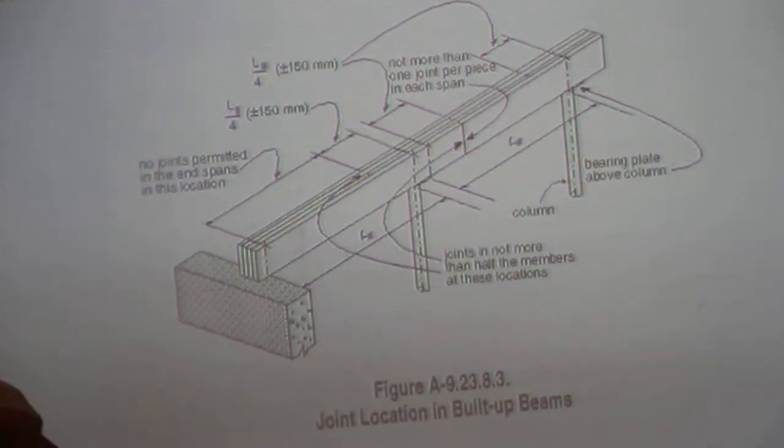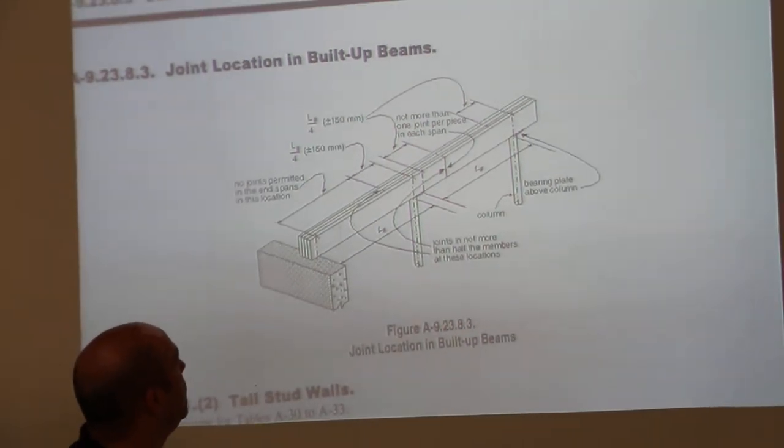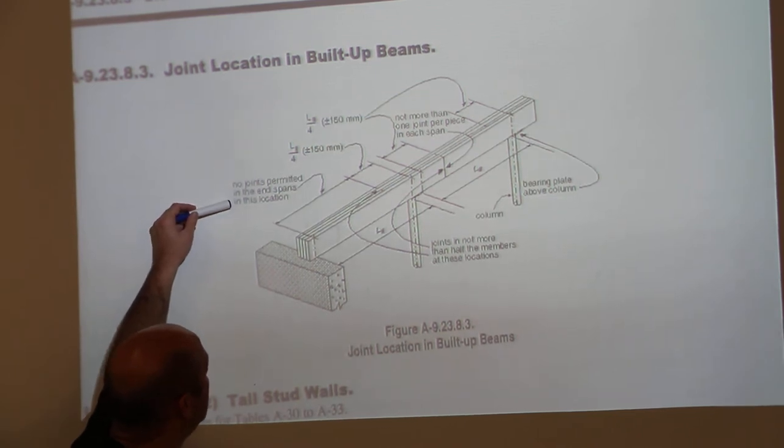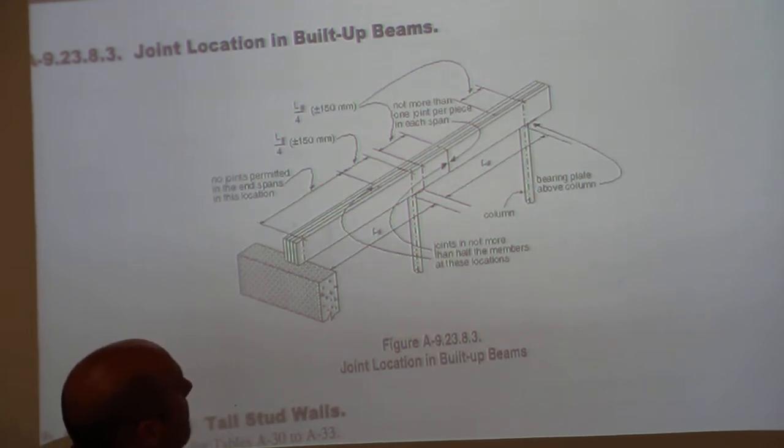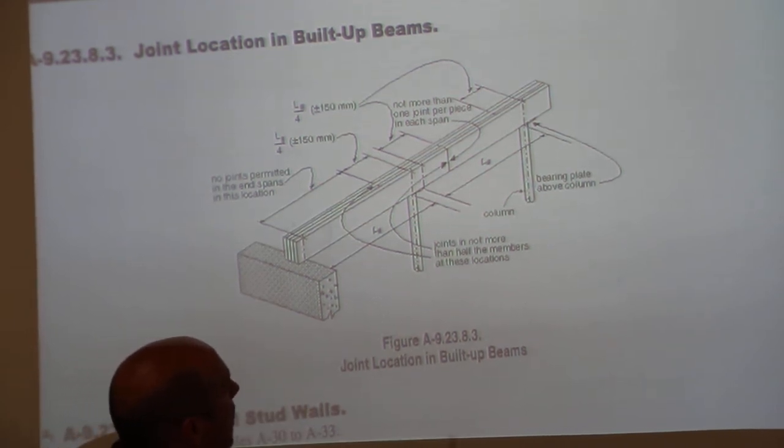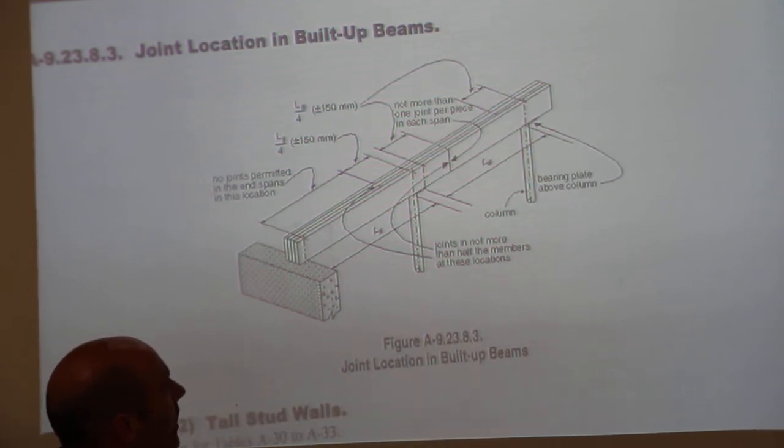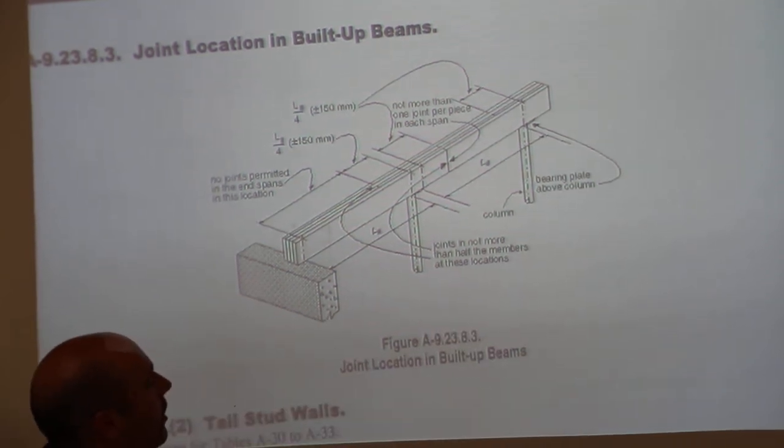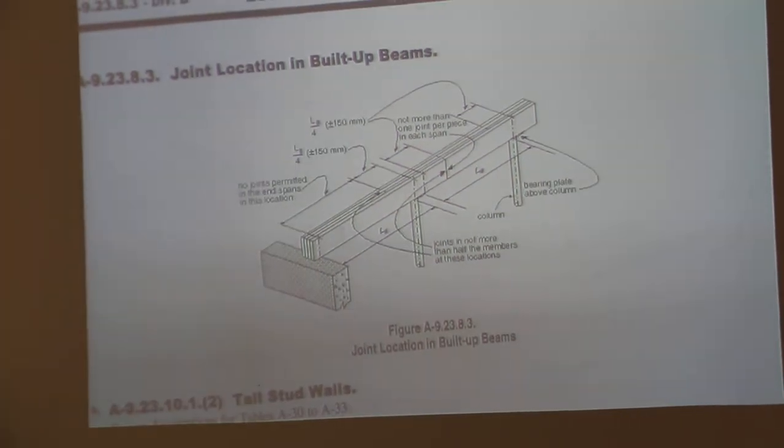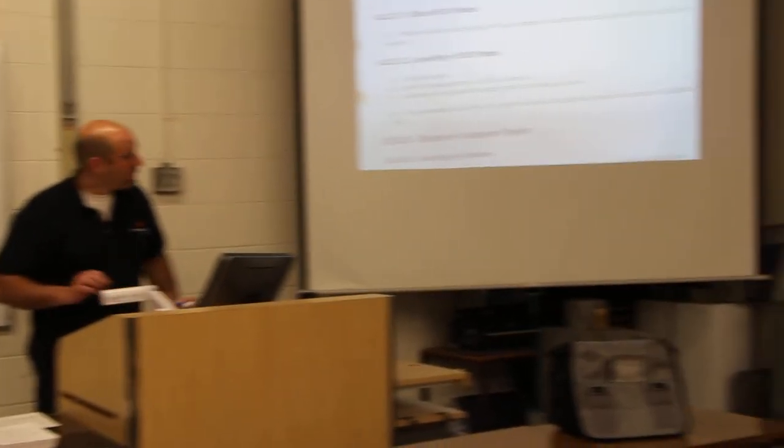This is on page A-120 in your volume 2 Appendix A. No joints are permitted to be at the end of the beams in this location. Not more than one joint per piece in each span. Joints are not more than half the members at these locations. And here we have our column, and here we have the bearing plate above the column. So let's come back over and let's finish up the sentences here on part 9.